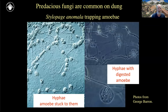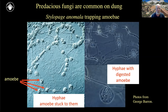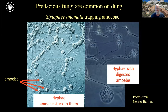There are also predaceous fungi common in dung, feeding on things other than the dung itself. Here is Stylopage anomala, an amoeba feeder. The arrows show amoebae stuck to little sticky spots on the hyphae of Stylopage. On the right-hand side, you can see bubbles of hyphae after the amoeba has been digested — just remnant hyphae remaining. So it's a predator of amoebae and is super common on dung.